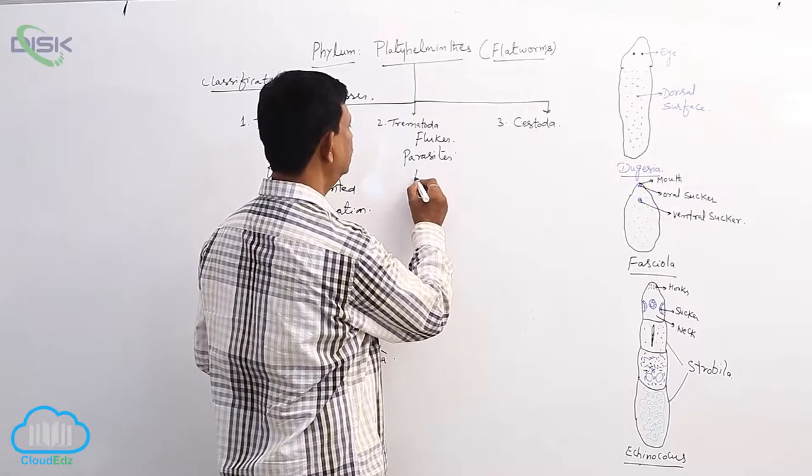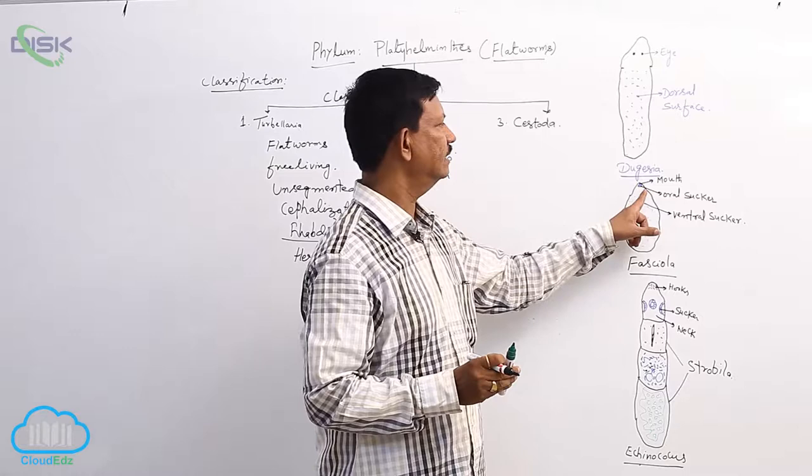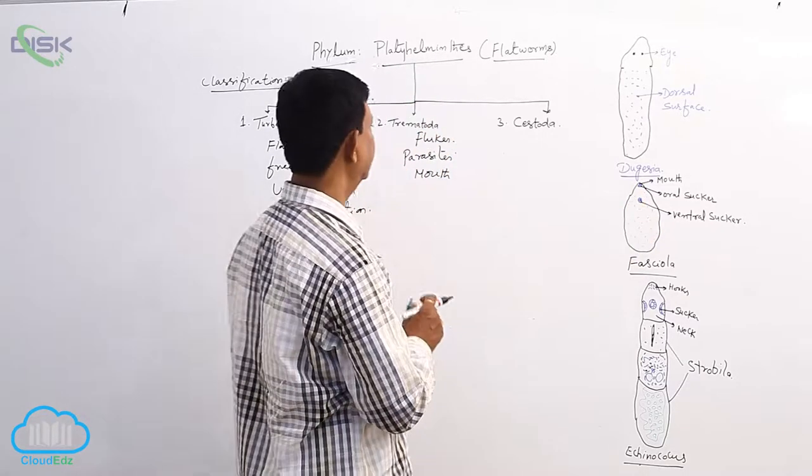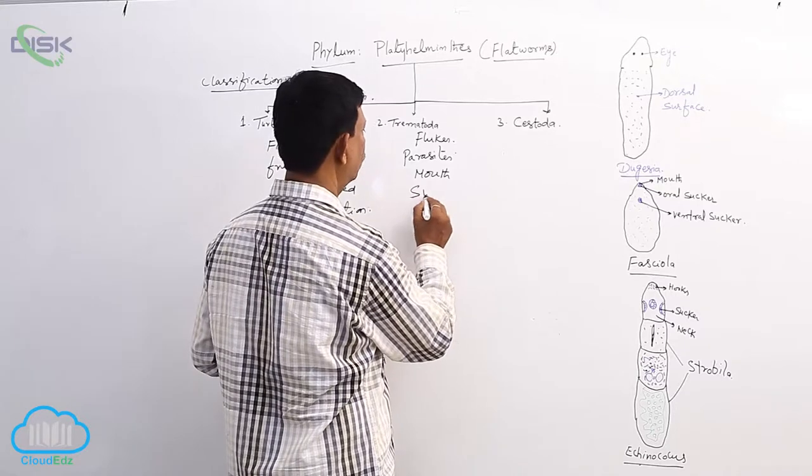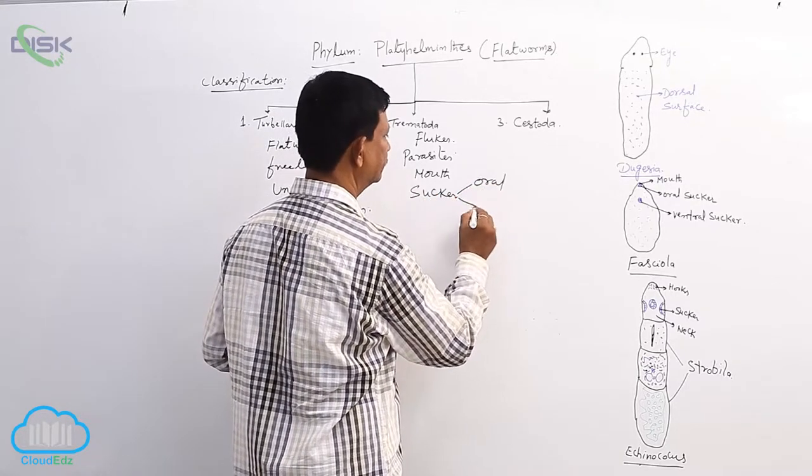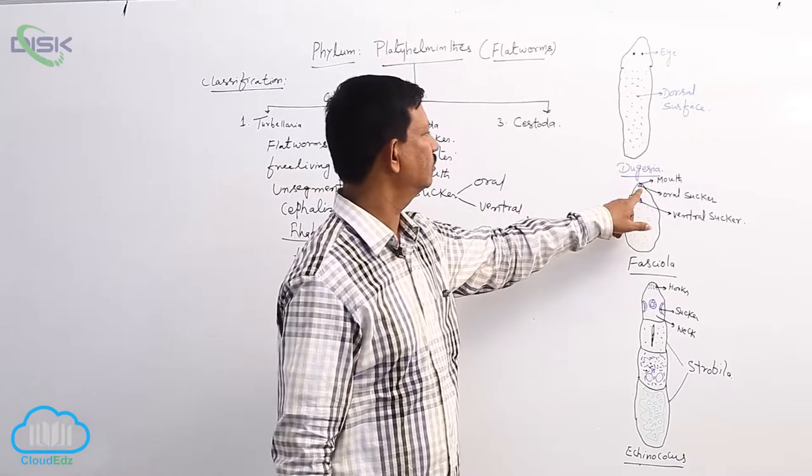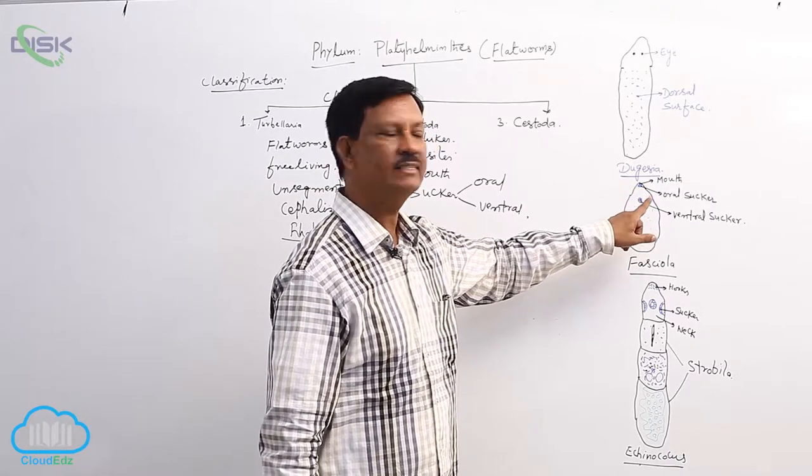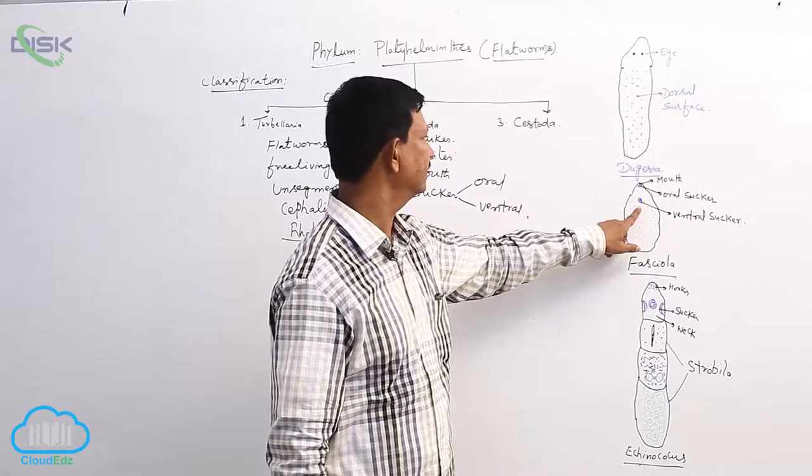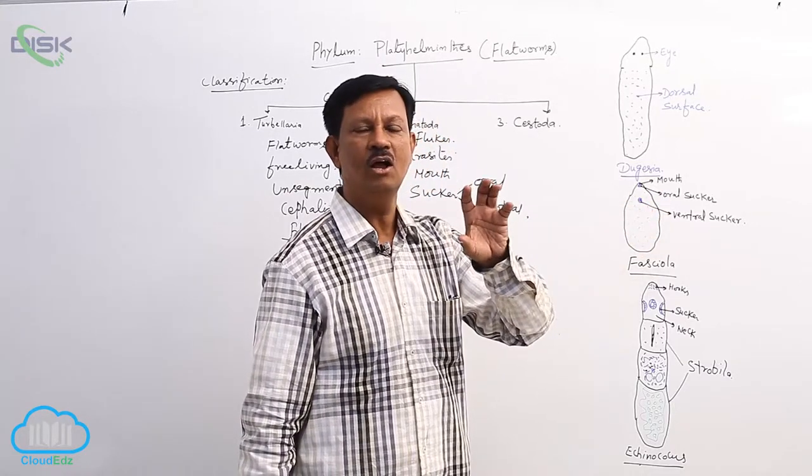There are two suckers. Mouth is present, around the mouth sucker is present and usually two suckers are present. They are known as the oral sucker and ventral sucker. Oral sucker is present around the mouth and on the ventral side behind the oral sucker, another large sucker is present which is the ventral sucker. With the help of the oral sucker and ventral sucker, it is attached to the host body.